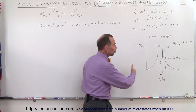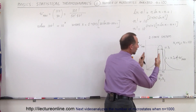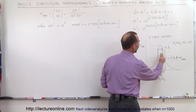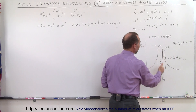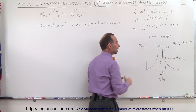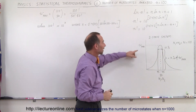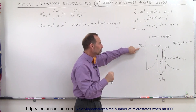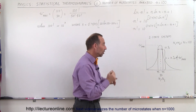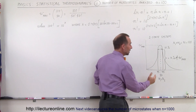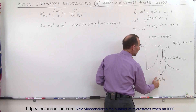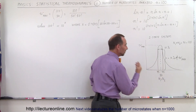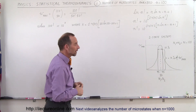We expect the distribution curve will continue to narrow, so that as you go out 10% away from its maximum value — omega sub max or W sub max — where W sub max represents the maximum number of microstates when the number of objects in state 1 equal the number in state 2, in this case that would be 50-50.